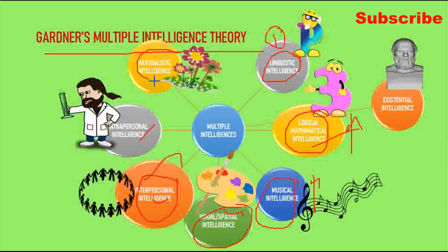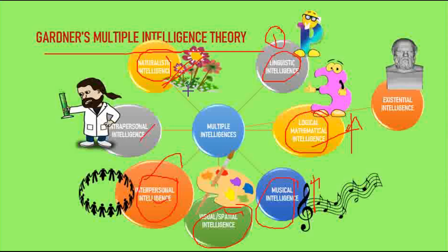Naturalistic intelligence — they have a love for nature, including flora, fauna, and all biodiversity. Such people are hunters, farmers, bird watchers, botanists, biologists, tourists, and gardeners. They enjoy finding patterns and relationships in nature, enjoy pets, and prefer being outside rather than inside the house.